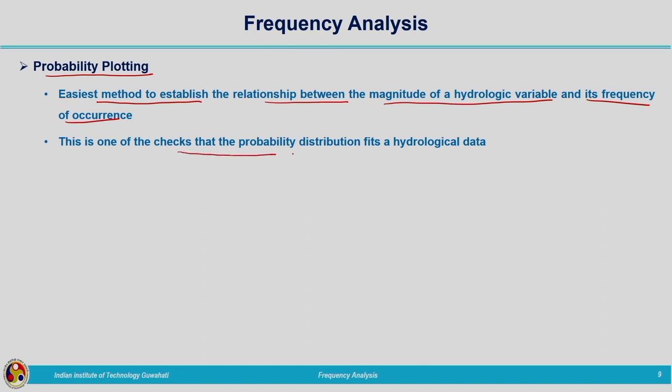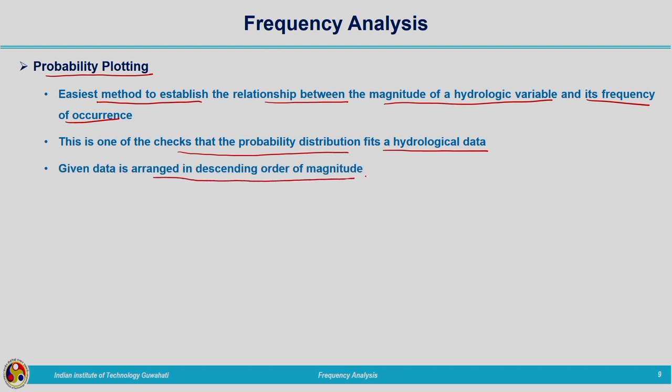Coming to frequency analysis, we start with probability plotting. This is the easiest method to establish the relationship between the magnitude of a hydrologic variable and its frequency of occurrence. This analysis applies to any hydrologic event — extreme or otherwise — relating magnitude to frequency. It is also one of the checks that a probability distribution fits hydrological data.